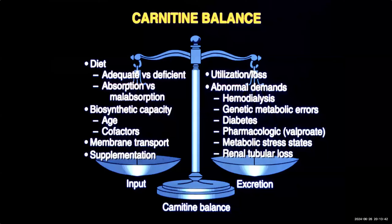Our second disorder is the high-affinity plasma-level carnitine transporter OCTN2. Carnitine balance in tissues depends on dietary adequacy — major dietary carnitine is derived from meat and dairy products — or deficiency as seen with a vegan diet or unsupplemented soy formulas, intestinal malabsorption, reduced endogenous biosynthetic capacity in infancy, and efficiency of membrane transport. On the excretion side, there are abnormally high demands in various metabolic states, carnitine loss with drugs such as valproic acid, and renal tubular losses.